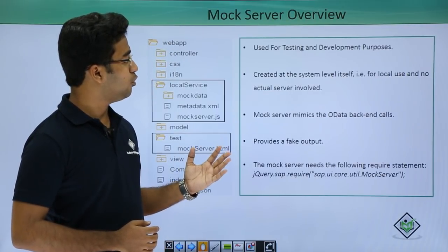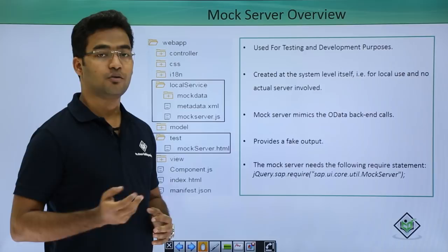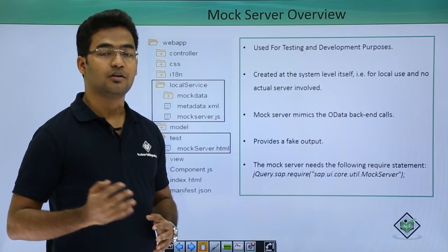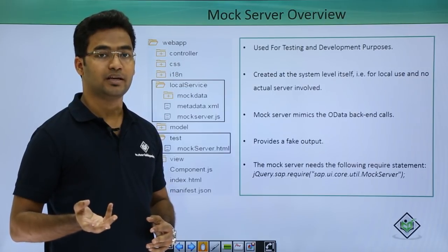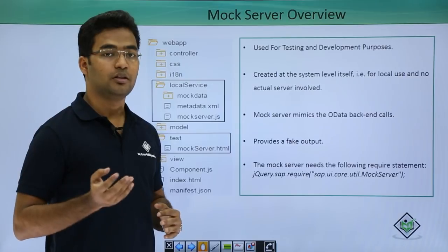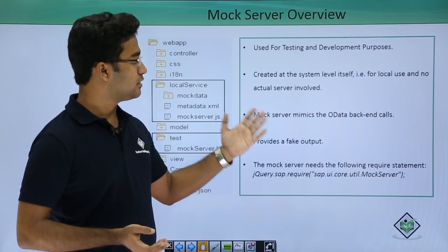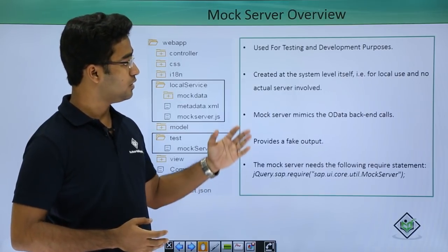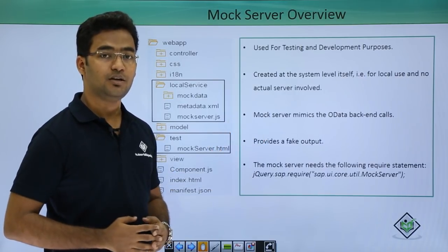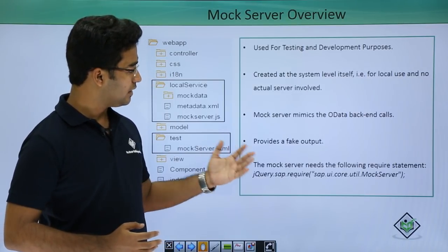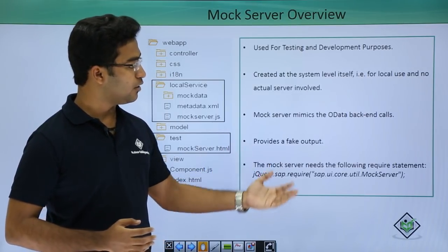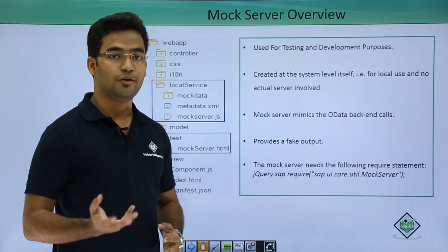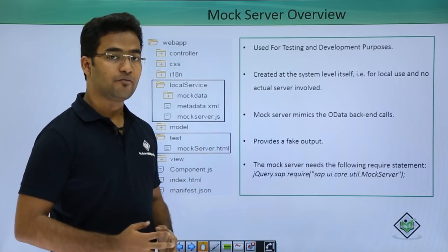Here we will see the mock server overview. What is mock server used for? Basically, if we have data coming from a real data server and that fails, we create a mock server. It is created at the system level itself for local use and no actual server is involved. Since it is for local use, it can be used for testing and development purposes. Basically, what it does is it imitates the OData backend calls and provides a fake output — by the name mock server, we could also imagine it provides a fake output.